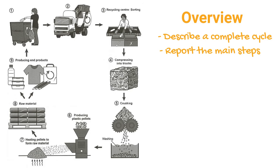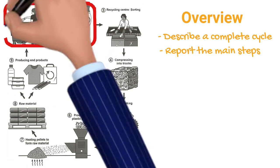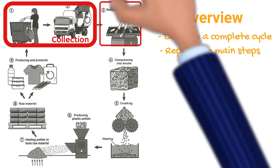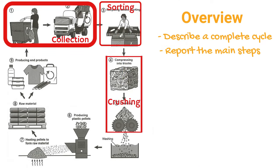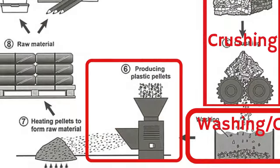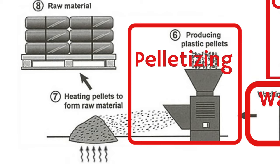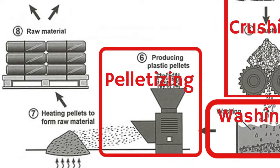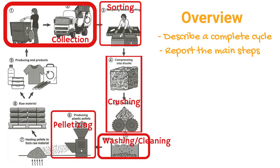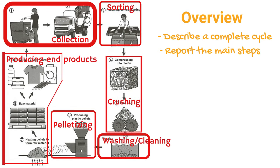We need to report the main steps in the overview paragraph. The first step is collection, then sorting, then crushing, then washing — or you can say cleaning. For this step, you can use the original wording 'producing plastic pellets', but since this is the overview paragraph, it's better to choose a word that is more general. Here we can just call this step 'pelletizing'. Pelletizing is more general than the original wording and therefore better suits the overview paragraph. Finally, we have this step of producing end products.